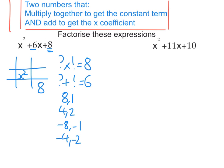Now only one pair of those are going to add to get 6. So 8 add 1 is 9, so it's not that one. 4 add 2 is 6, so it is that one.